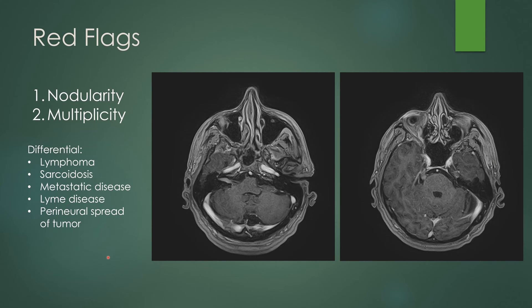Red flags on IAC images include nodular enhancement or multiple cranial nerves enhancing. In this case, there is nodular enhancement in the right internal auditory canal, but when you examine the other cranial nerves, you see nodular enhancement of the right trigeminal nerve and partial nodular enhancement of the left trigeminal nerve heading towards Meckel's cave. The differential in this case includes lymphoma, sarcoidosis, metastatic disease, Lyme disease, or perineural spread of tumor — in this case, it was lymphoma.